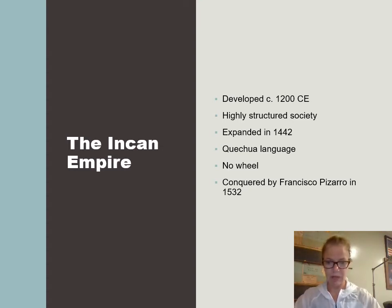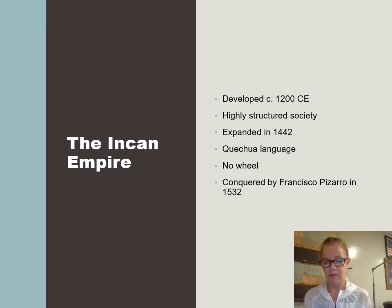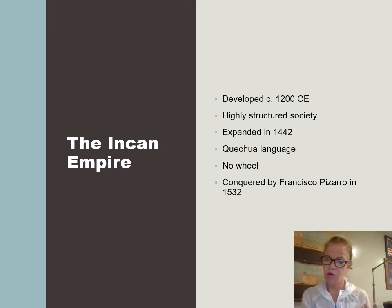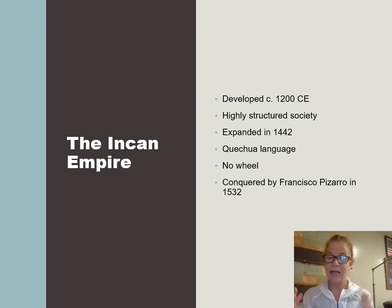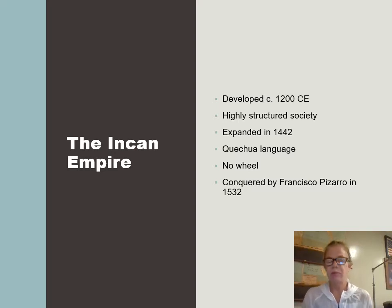Most women were supposed to make cloth. They were excellent weavers using hand looms, making intricate cloth that the people of Peru are still known for today. Francisco Pizarro came over and conquered them in 1532 — about 12 to 13 years after Cortés conquered the Aztecs. They found warehouses of cloth, which the Spanish didn't care about and burned. They wanted the gold and silver, and there was a lot to be had in the Andes Mountains. They expanded in 1442 but were then conquered by Pizarro. They did not have the wheel and spoke the Quechua language.